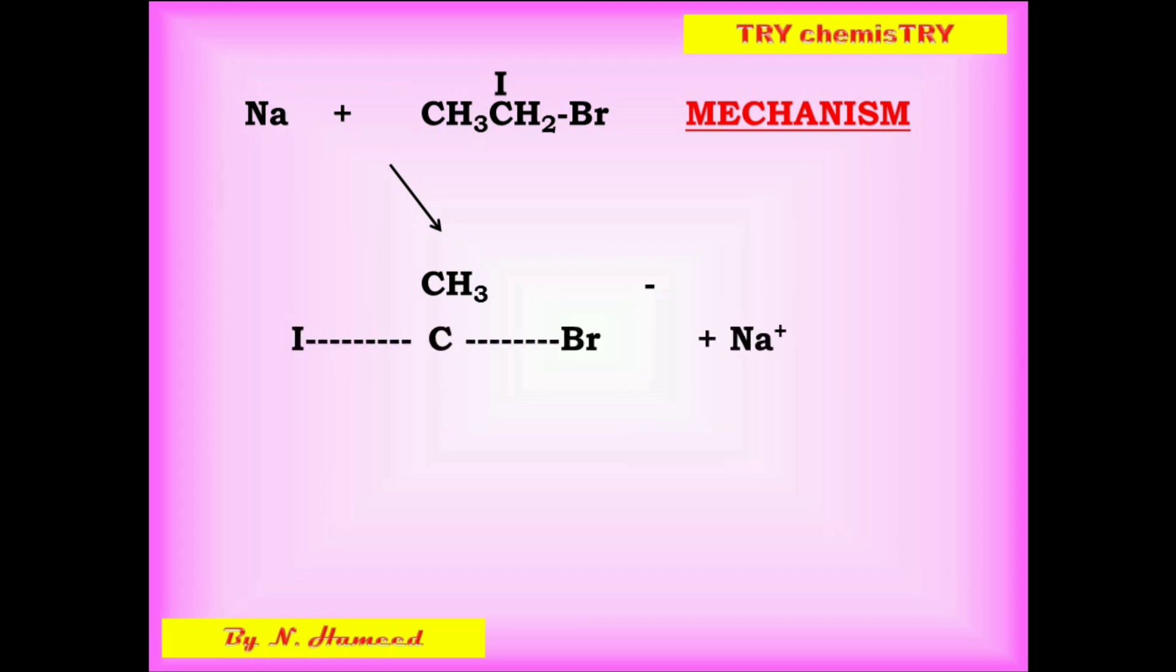This is the transition state. Here, both iodine and bromine are bonded with the alpha carbon in the hydrocarbon. Finally, the bromine is cleaved from the carbon.